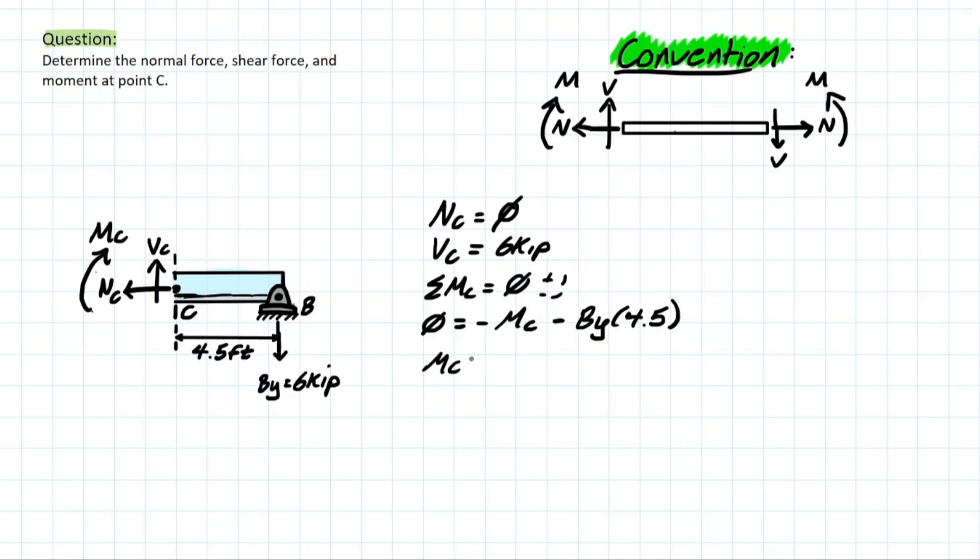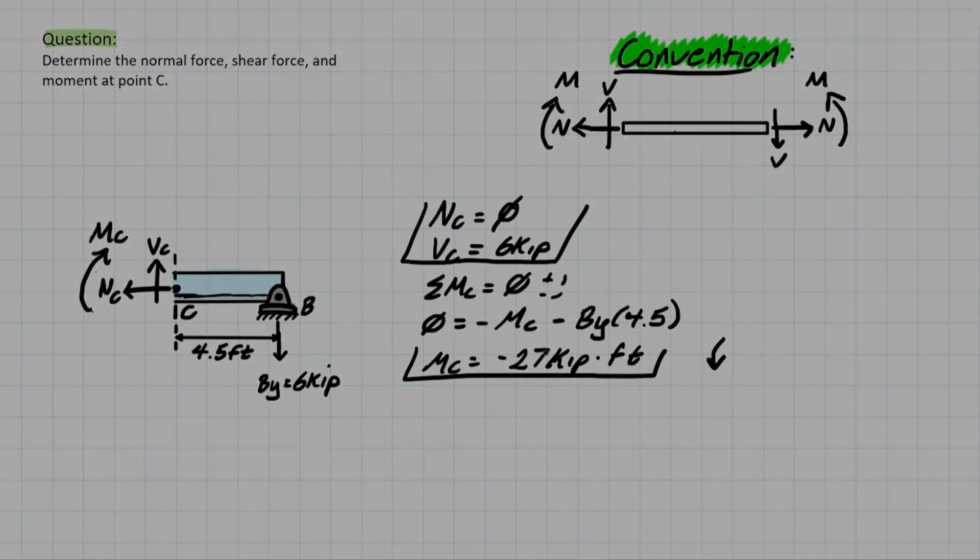Solving for MC, you'll be left with negative 27 kip feet, meaning that the direction that the convention assumed that our moment would go in is actually the opposite. So it will be looking something like this and we can keep this negative in our final answer just to avoid confusion because our drawing states that we have drawn it this way and our equation also states that we have drawn it that way as well. So we just leave the negative as it is and we box our answers and call it a day. So that's our final answer for this problem.